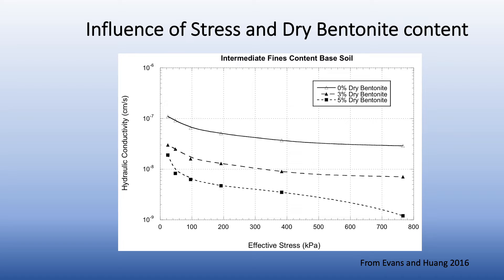This slide also shows that if you add additional dry bentonite, the hydraulic conductivity will decrease. Note that by adding slurry just to get the material to a proper slump, the mixture will have about one percent bentonite.